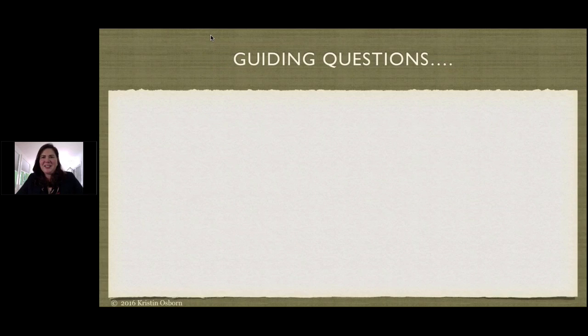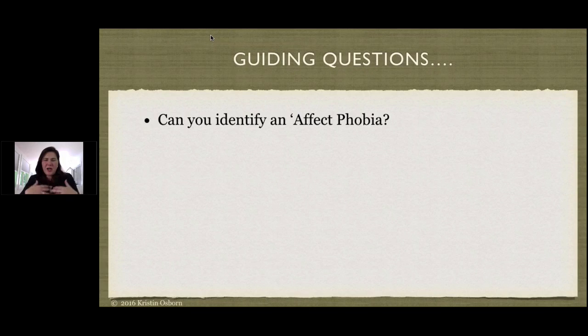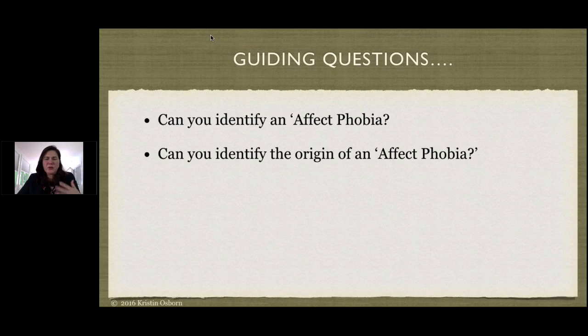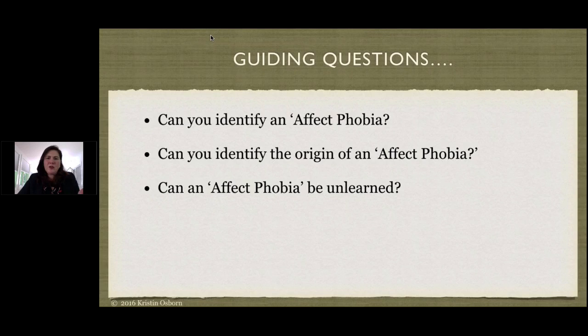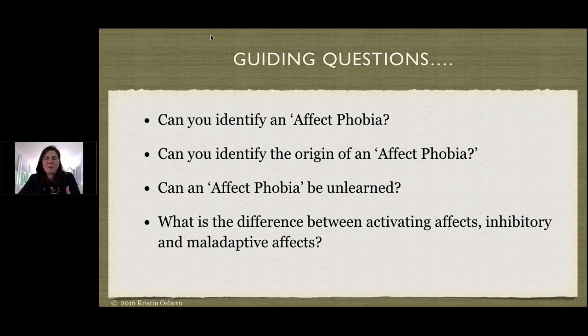As we begin today, there are a few guiding questions. All I want you to do is look inside yourself, and if you have paper in front of you, just write down the questions that feel meaningful to you. We'll be looking at what an affect phobia is, talking about the origin of affect phobias, and most importantly, the fact that an affect phobia is learned and can be unlearned. When we're meeting with our patients, that's basically what we're trying to do — help them unlearn an affect phobia so that they have more access to the power of their emotions.